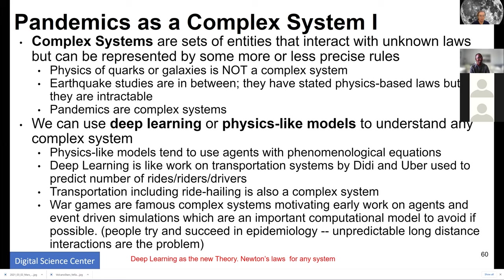My earliest work on parallel computing was on war games — the Strategic Defense Initiative — tracking incoming missiles. All war games involve interactions between warfighters, planes, and bombs, always done with agents. These are almost suddenly addressable with deep learning, but this use is only just starting. Complex systems are not random systems but systems subject to unknown laws, which is why machine learning is interesting — it learns the model and learns hidden variables by looking at big data from the system.